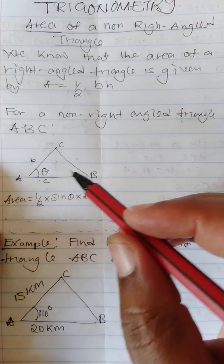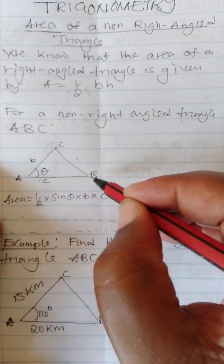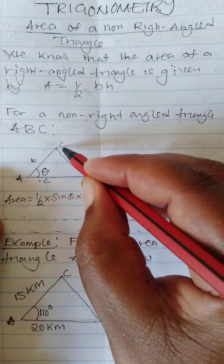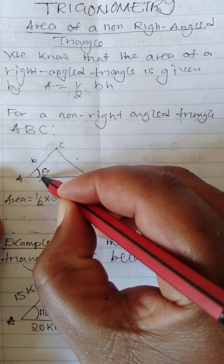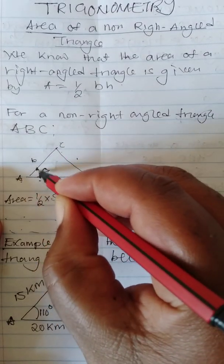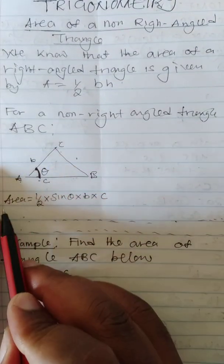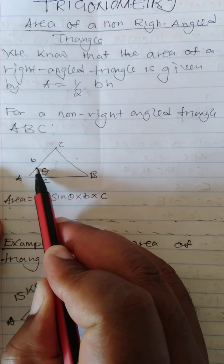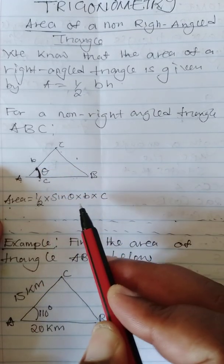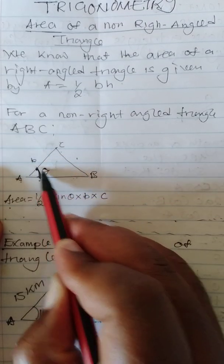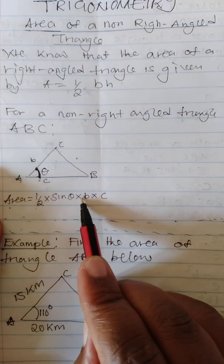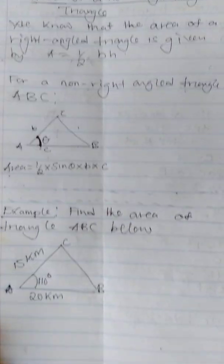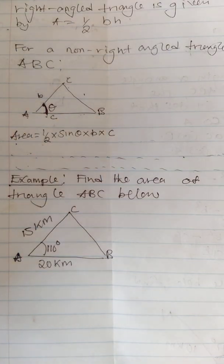Suppose we have a situation where we have two sides, maybe AB and CA, that are producing an angle here. How do we get the area? We say area is equal to half multiplied by the sine of the angle given, then multiply by the two sides that are producing that angle, which is b and c.